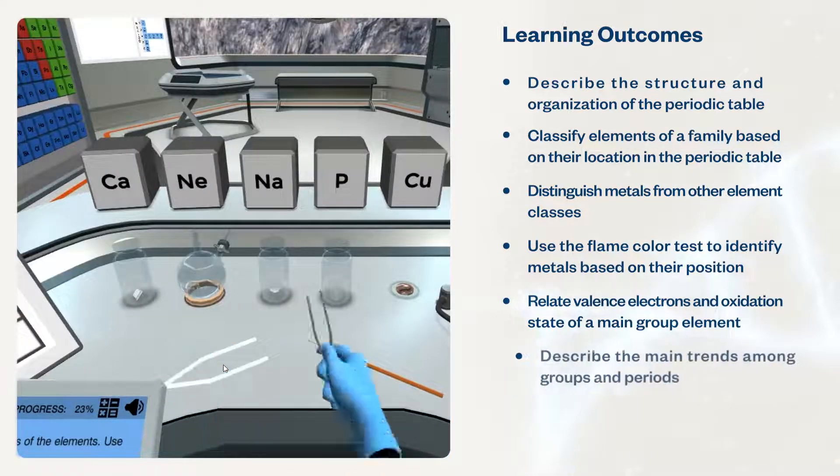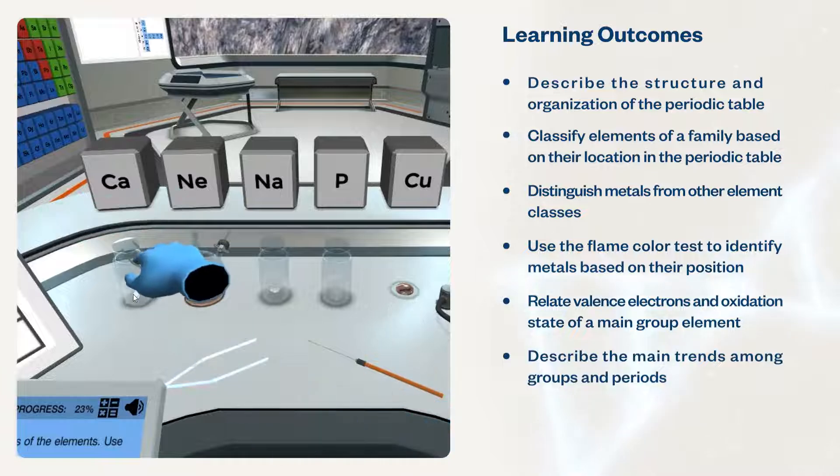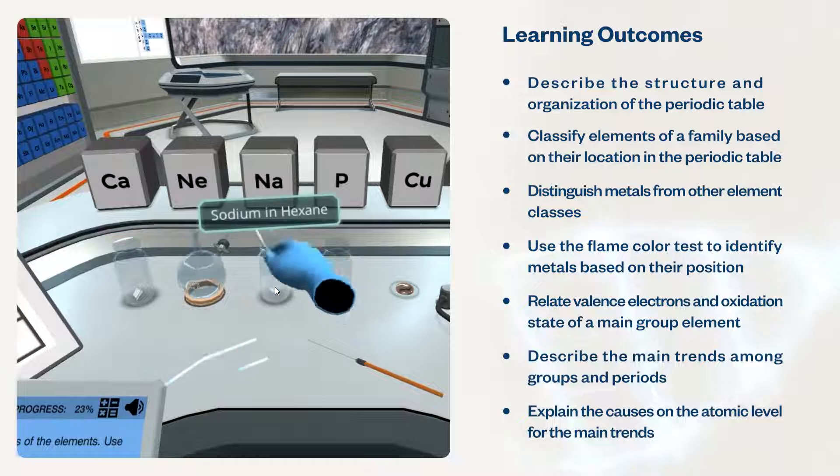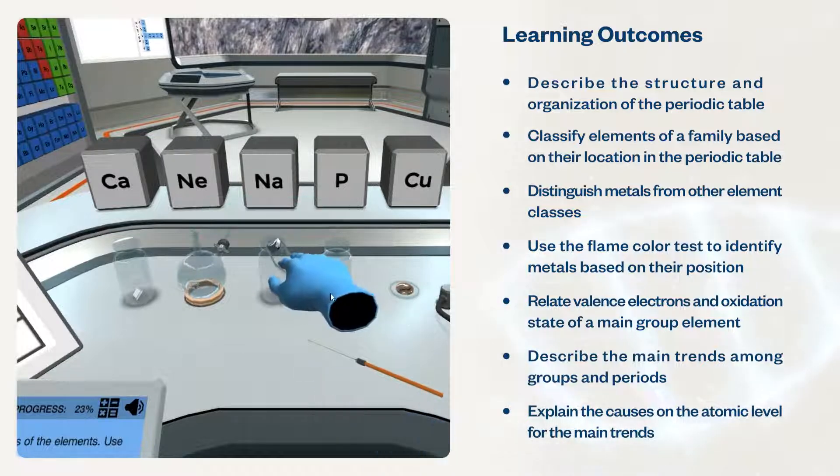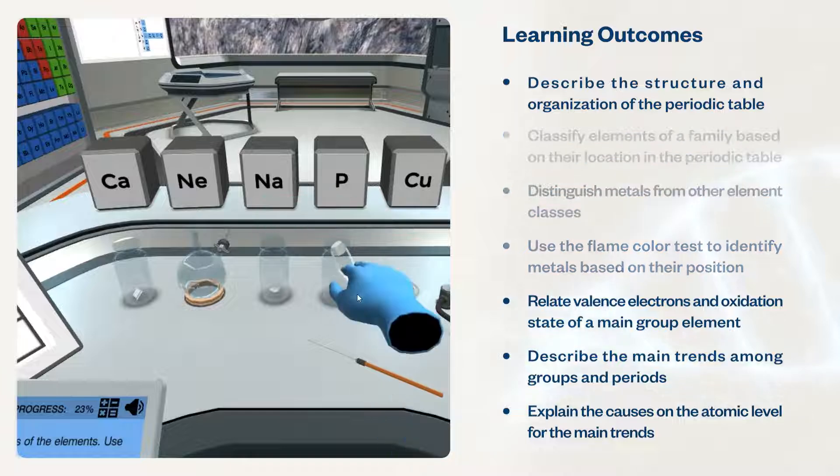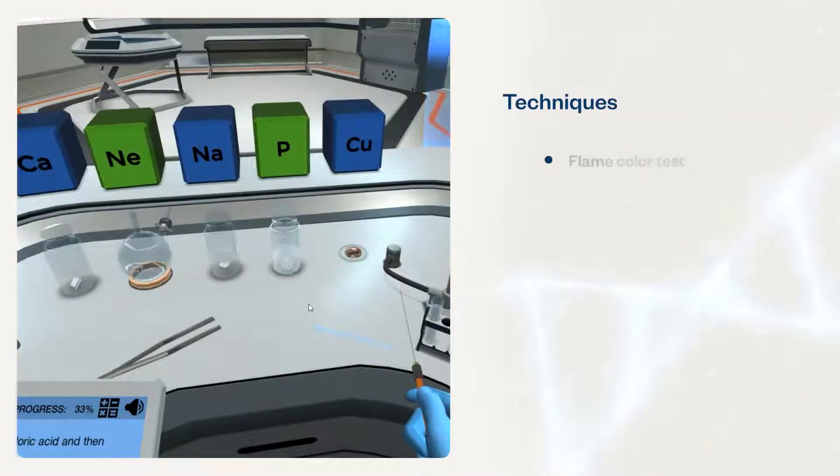Students will describe the main trends among groups and periods for atomic properties, explain the causes on the atomic level for the main trends among groups and periods concerning atomic radii, ionization energy, and electronegativity. Students will use techniques such as flame color test.